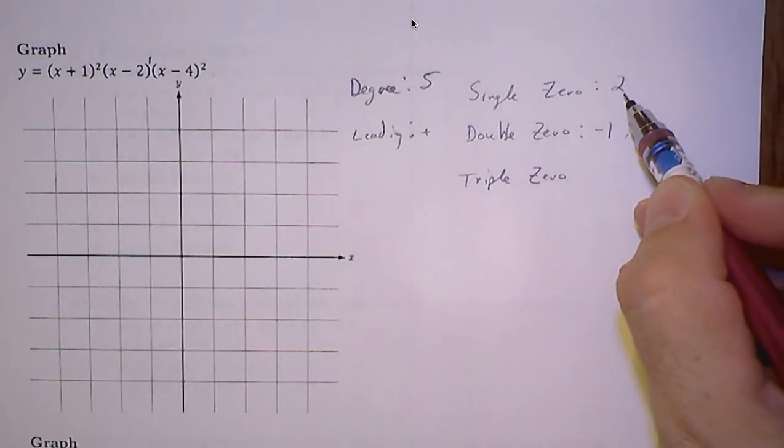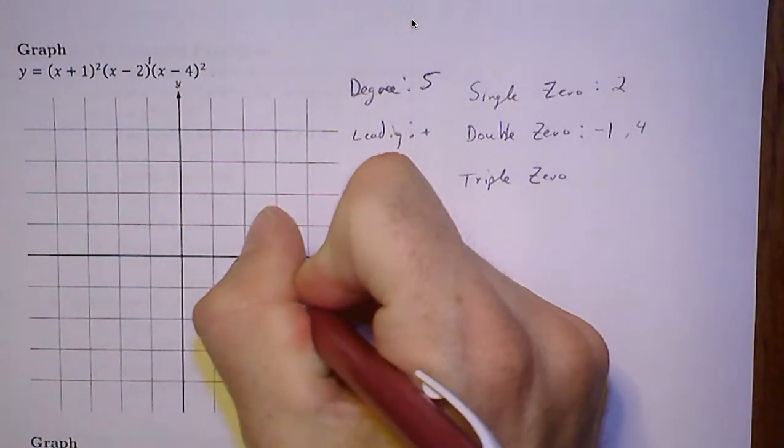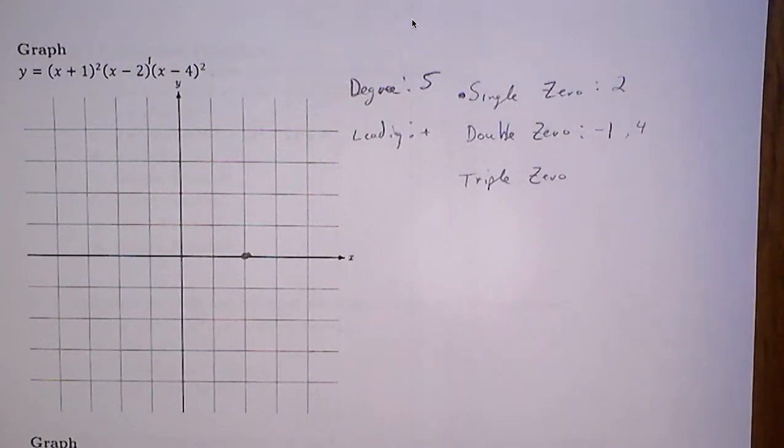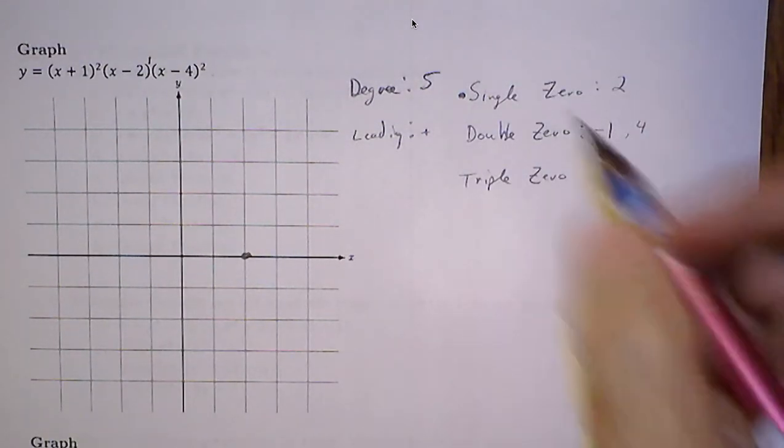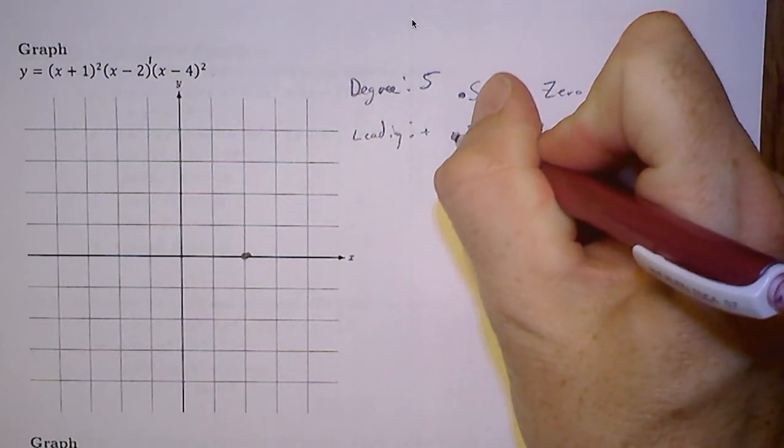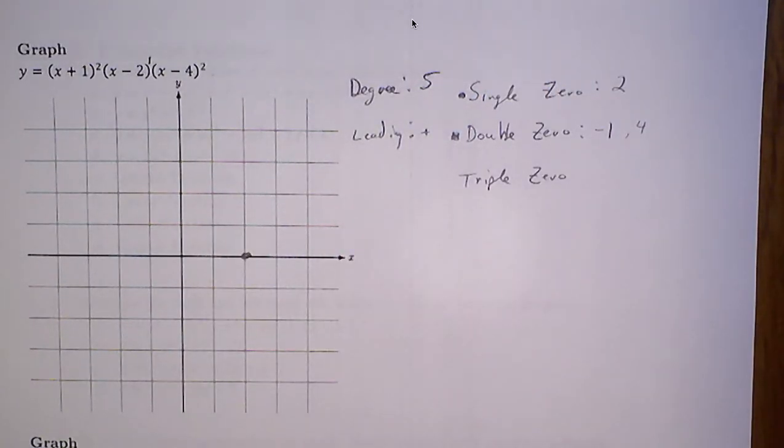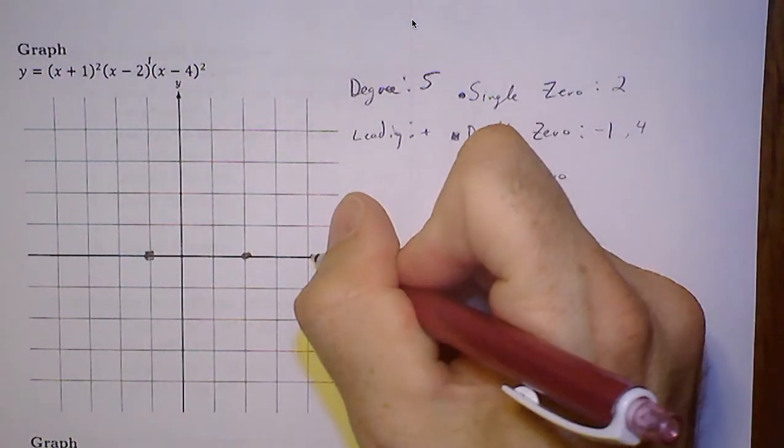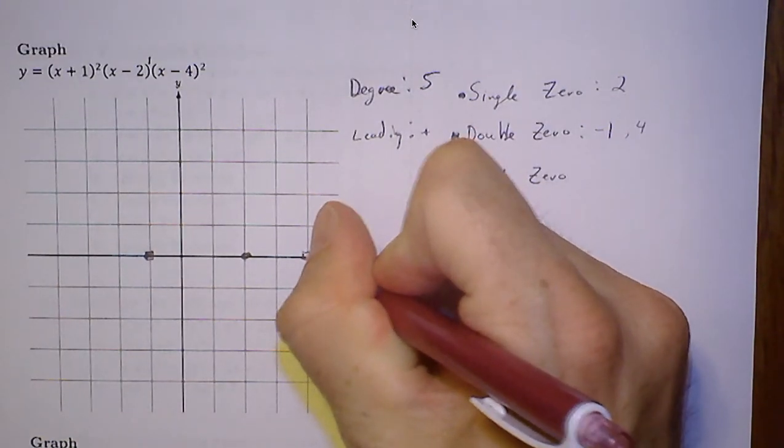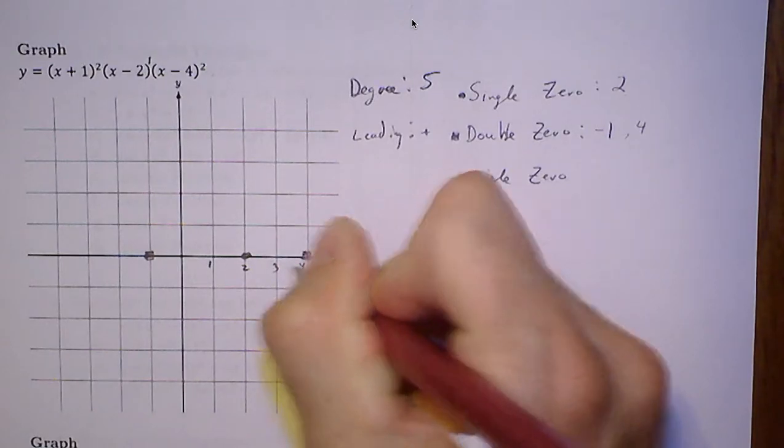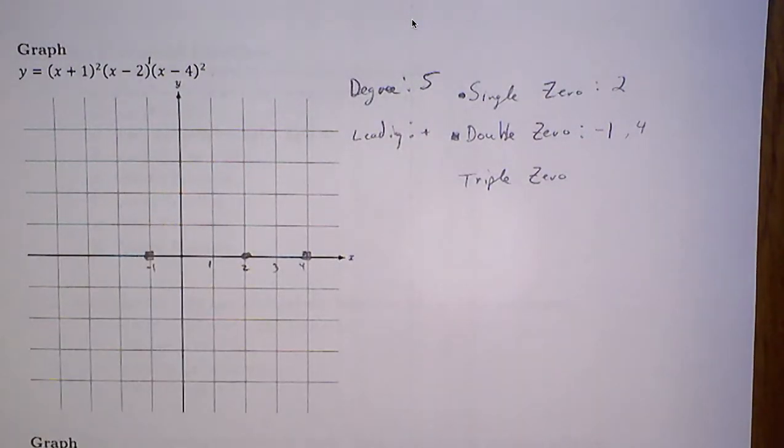I have a single zero at 2. So I'm going to put a round dot. By the way, this is just for me. A double zero, I'm going to put that as a square. So I have two double zeros. One at negative 1, which is over here. One at 4. So here. Better label my axis correctly, because otherwise I'm going to be receiving a half mark deduction.